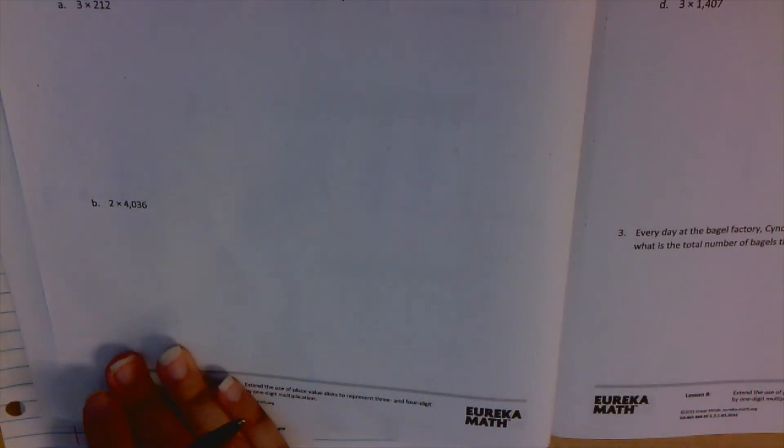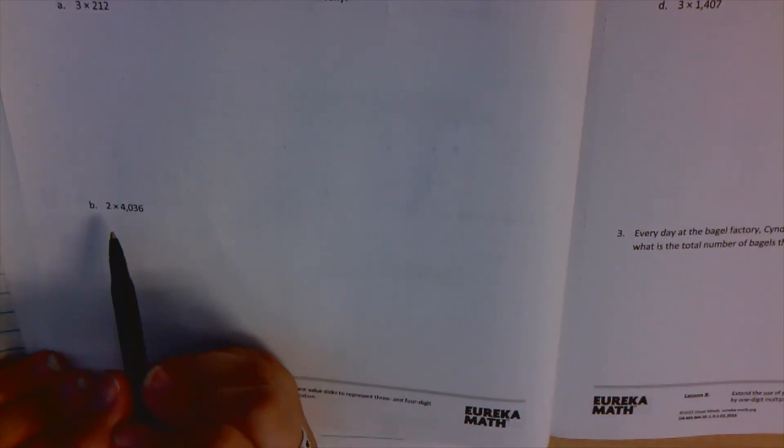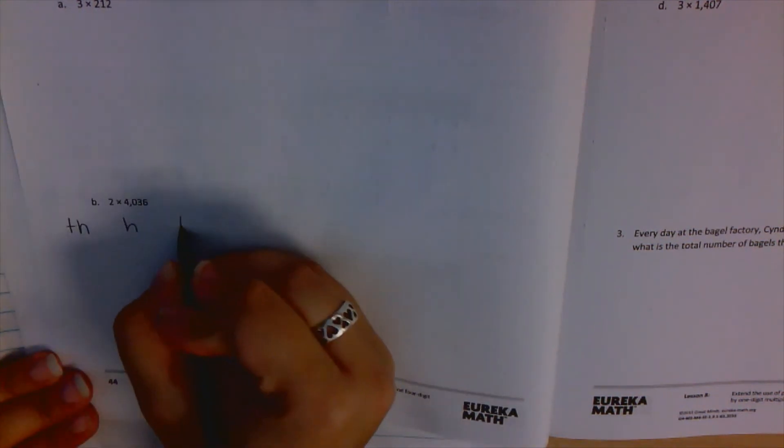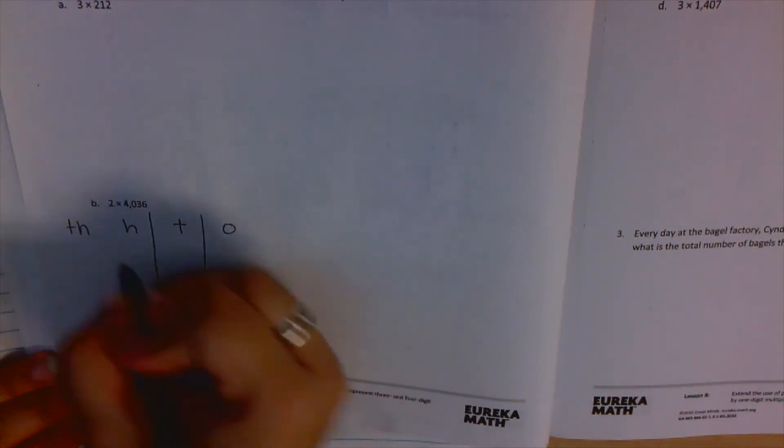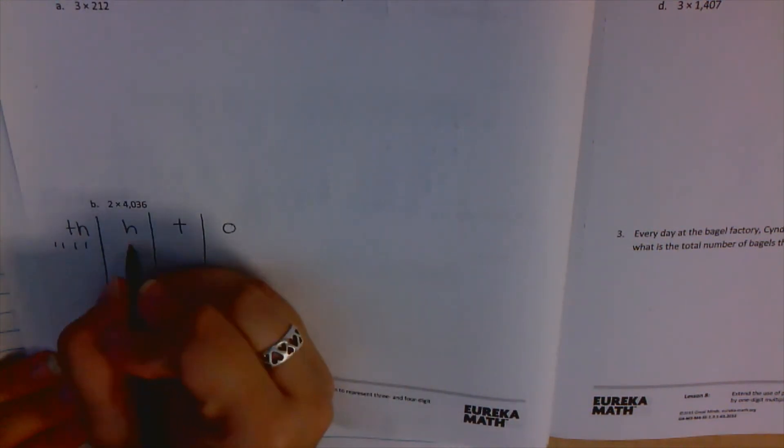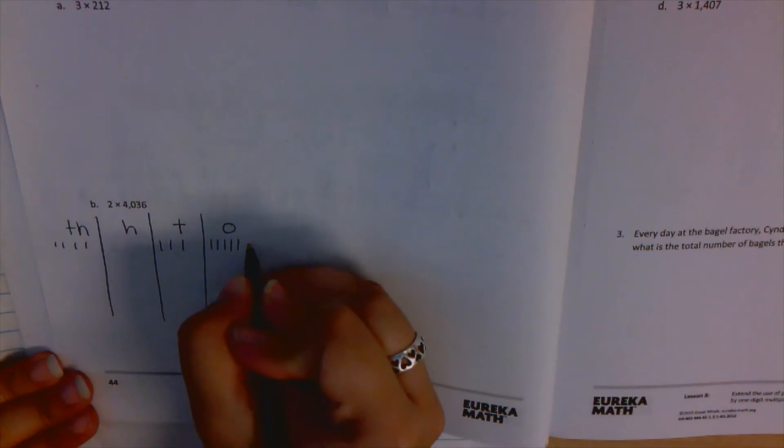For the final problem that we're going to do together here in the video today, I'm going to do 2 times 4,036. The directions ask you to represent the expression with disks, use a method shown during the lesson, regroup as necessary, and then to the right, record the partial product vertically. So I'm going to do thousands, hundreds, tens, ones. One, two, three, four thousand. Zero hundreds. One, two, three tens. One, two, three, four, five, six ones.